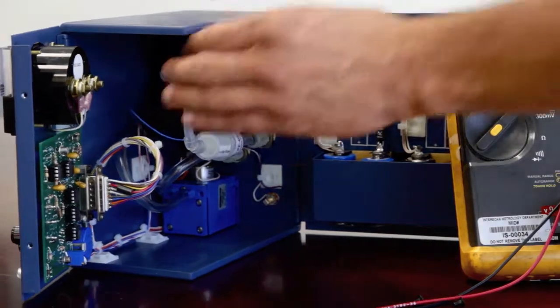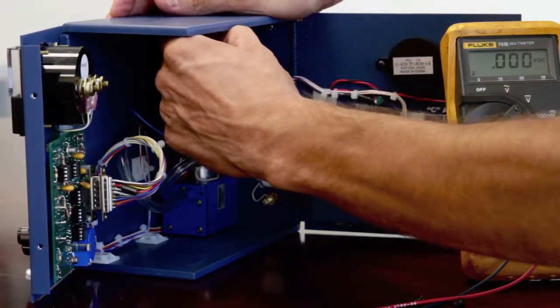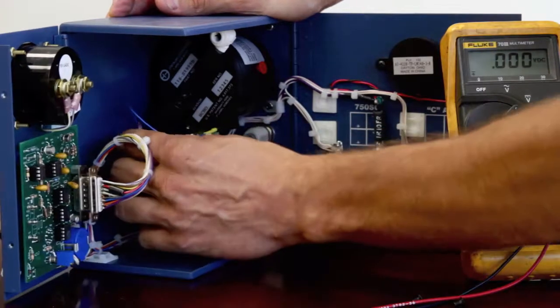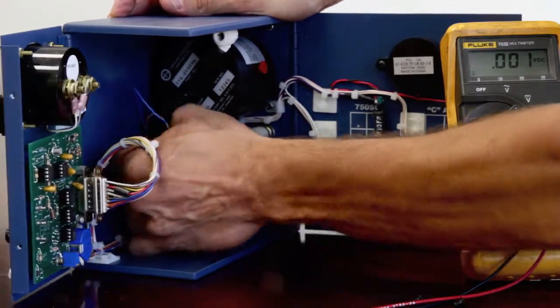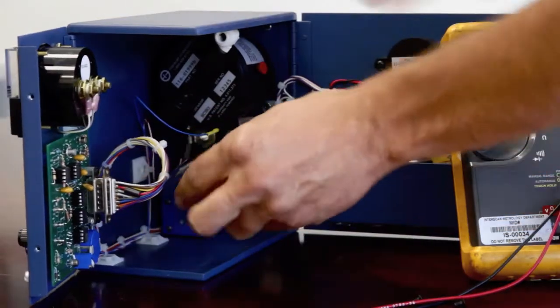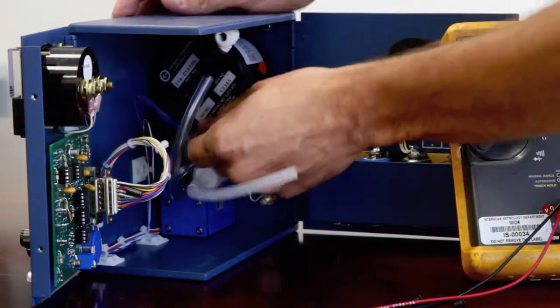Next, remove the sensor. Start by disconnecting the sensor tubing. Then, disconnect the lead wires.